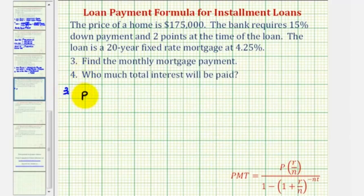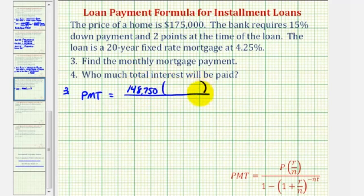So number three, the monthly payment is going to be equal to this quotient here, where P is the loan amount, which is $148,750, times R divided by N, where R is the annual interest rate and N is the number of payments per year. Since the rate is 4.25% expressed as a decimal, we would have 0.0425. We're making monthly payments, so N is 12 since there's 12 months in a year. So here's the numerator.